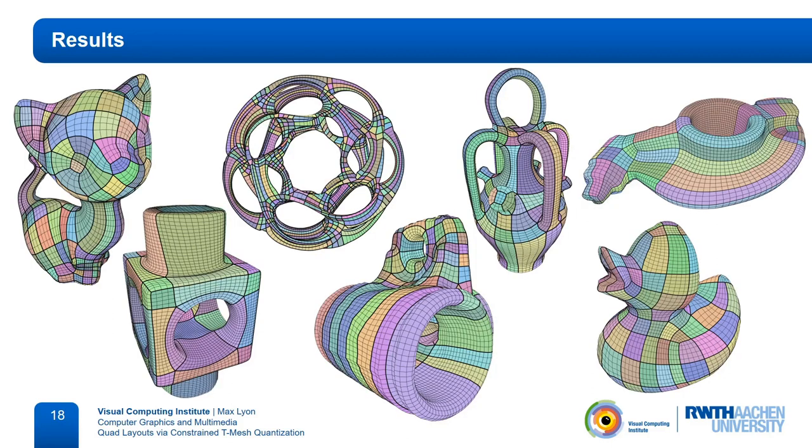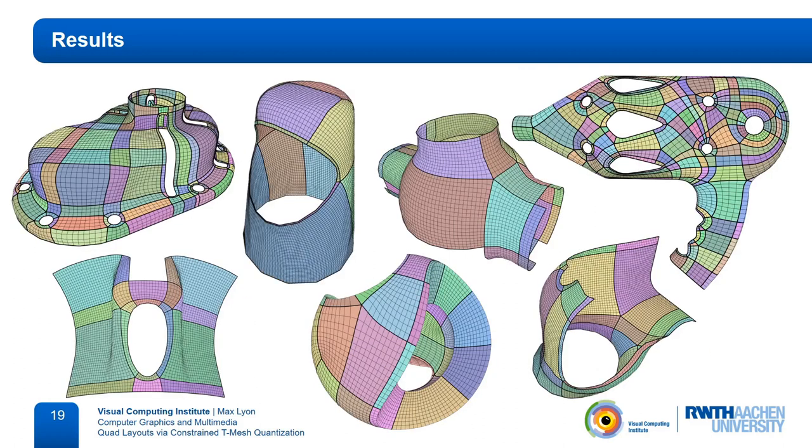We use the resulting layouts to generate quad meshes. Here are some results. The colors identify the patches of the layout. I did not mention this during the presentation, but we also support meshes with boundaries or feature edges, which can be seen here.